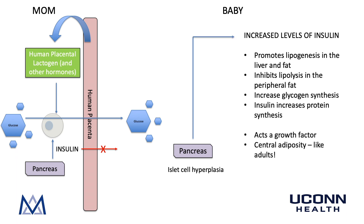Increased levels of serum insulin in the baby cause the following: insulin promotes lipogenesis in the liver and peripheral fat, insulin inhibits lipolysis in the peripheral fat, insulin increases glycogen synthesis in the liver, and insulin increases protein synthesis. Through all these actions, and with the function of insulin as a growth factor, this causes growth of the baby. Very importantly, the baby grows centrally with central adiposity — just like syndrome X or metabolic syndrome in adults. This is why these babies are at increased risk for shoulder dystocia at time of delivery. Not only are these babies larger overall, they are also larger in their abdomen — the head delivers, but the shoulders and abdomen can get stuck at time of delivery.